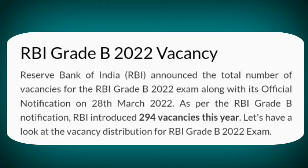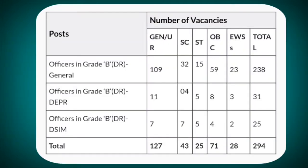Let's have a look at the vacancy distribution for RBI Grade B 2022 Exam. For Officers in Grade B DR General, the number of vacancies are: UR - 109, SC - 32, ST - 15, OBC - 59, EWS - 23, Total - 238.